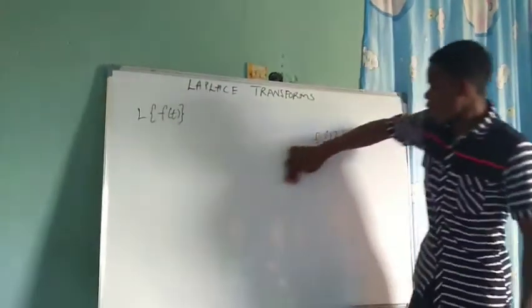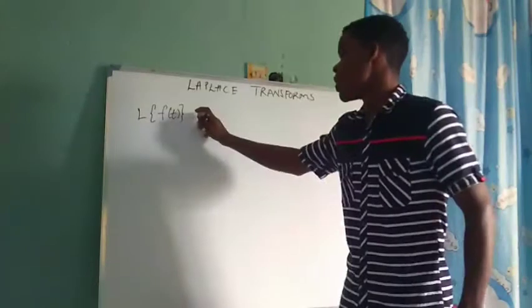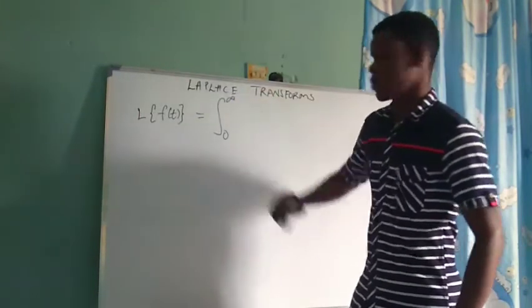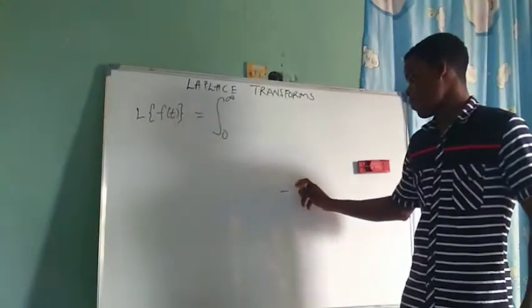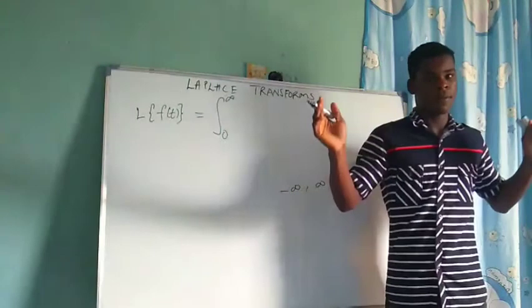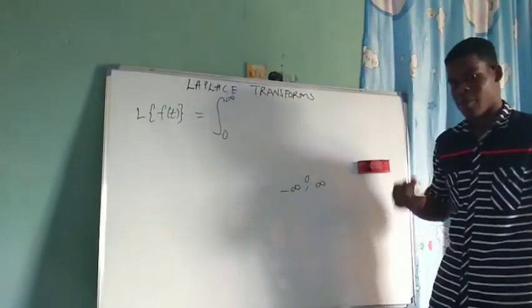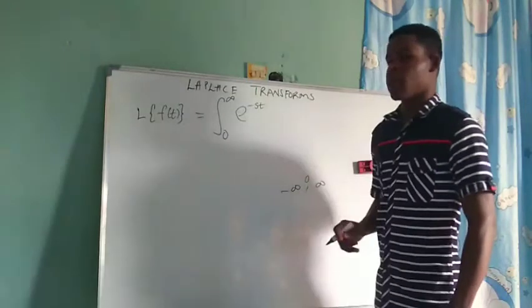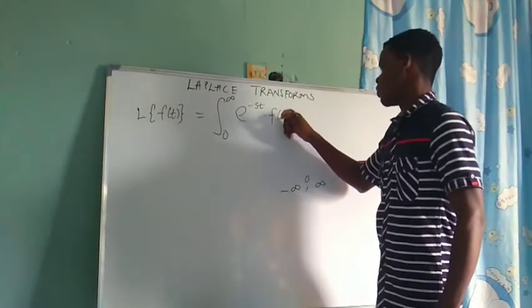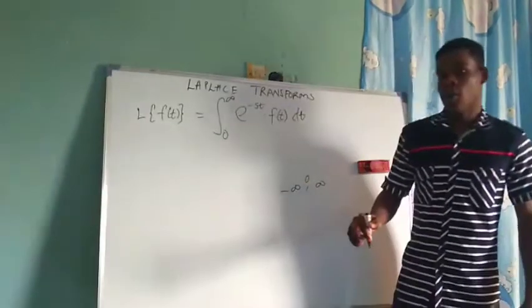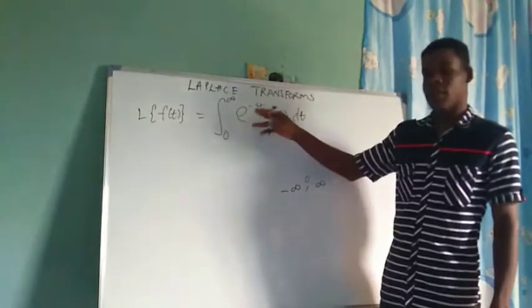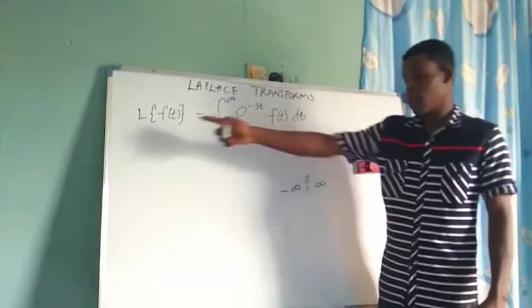We will be transforming a function, not just a variable. And when we do that, the Laplace transform is given to be the semi-infinite integral — that is, the integral from 0 to infinity. It is starting from the midpoint 0, which is why we say semi-infinite. The Laplace transform of f(T) is given by the integral from 0 to infinity of e^(−ST) times f(T) dT.